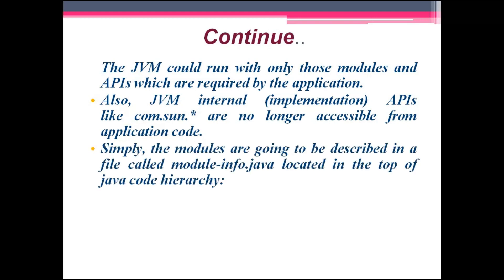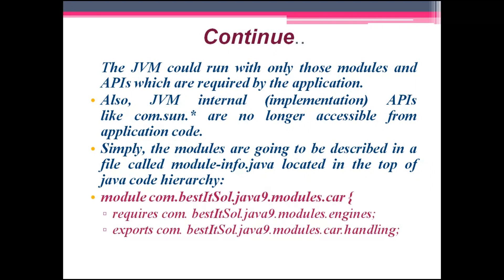The modules are described in a file called module-info.java, which is located at the top of the Java code hierarchy. For example: module com.baseid.solutions.java9.modules.car requires com.baseid.solution.java9.modules.engine and exports com.baseidsolution.java.modules.car.handling. This is an example of the modular system.